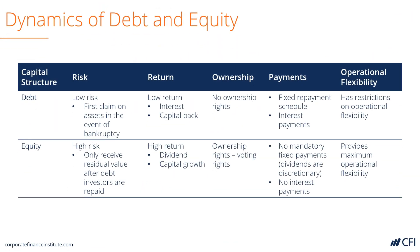The dynamics of debt and equity are as follows. Debt is lower risk and therefore has lower return. It does not come with any ownership rights, often has a fixed repayment schedule, and has restrictions on operational flexibility. Equity, on the other hand, is higher risk and therefore higher return. It comes with ownership rights, often with voting privileges, does not have mandatory fixed repayments or interest payments, and provides the maximum operational flexibility for a company.